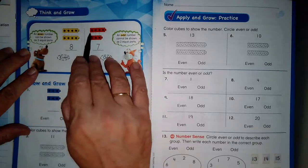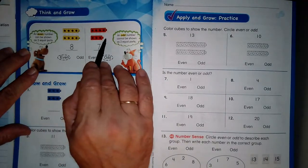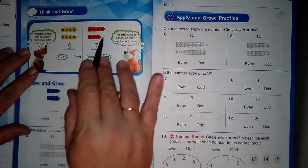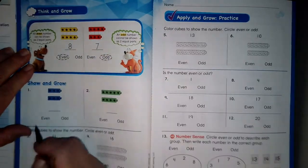What about seven? I have one, two, three, four in the top group and only three in the bottom group. So they are not equal groups. That is an odd number.